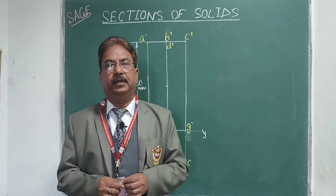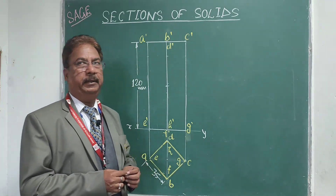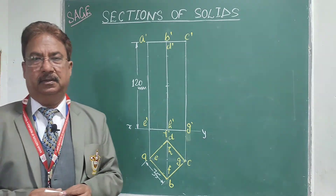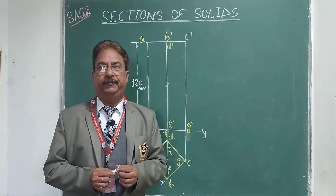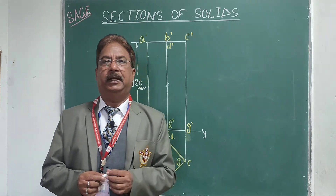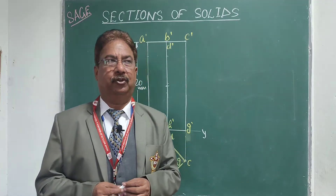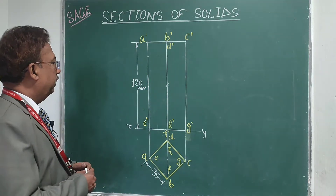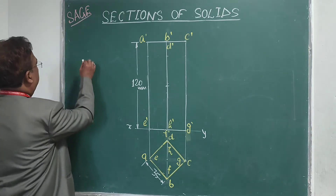Hello students, welcome again. Here I am with another problem on sections of solids — a very interesting problem. If you remember, earlier we solved a problem where from a cube we got a regular hexagon. A similar type of problem will be here again, and the simple solid will be a square prism.